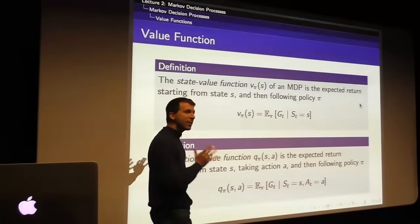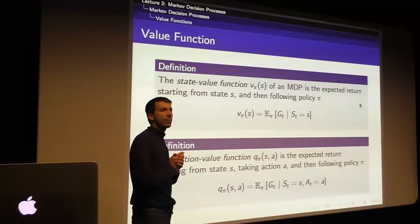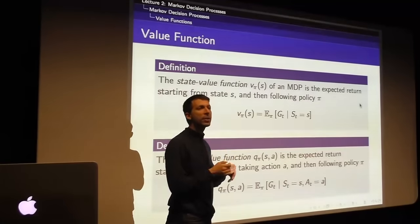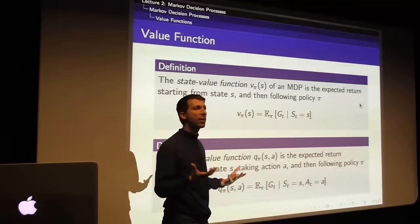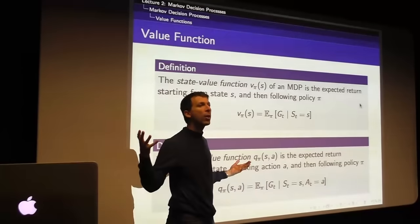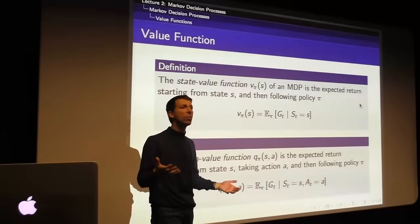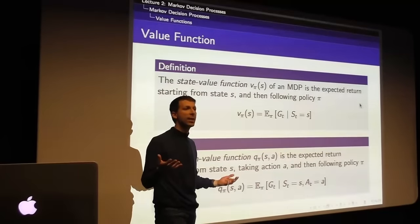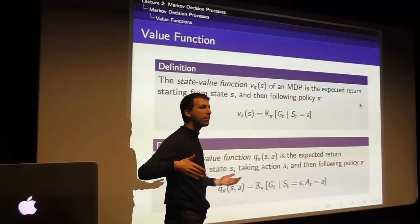With the policy concept established, we now have the value function for an MDP — what we actually care about. We had the value function for an MRP with no agency, but now with this policy there's a way we can choose to behave in our Markov process.